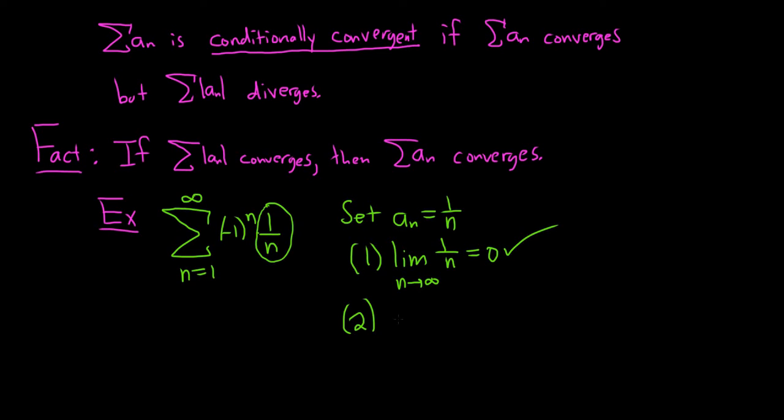So this is 0, so we're good. The second condition is that a sub n is non-increasing, and it is. So a sub n is non-increasing.